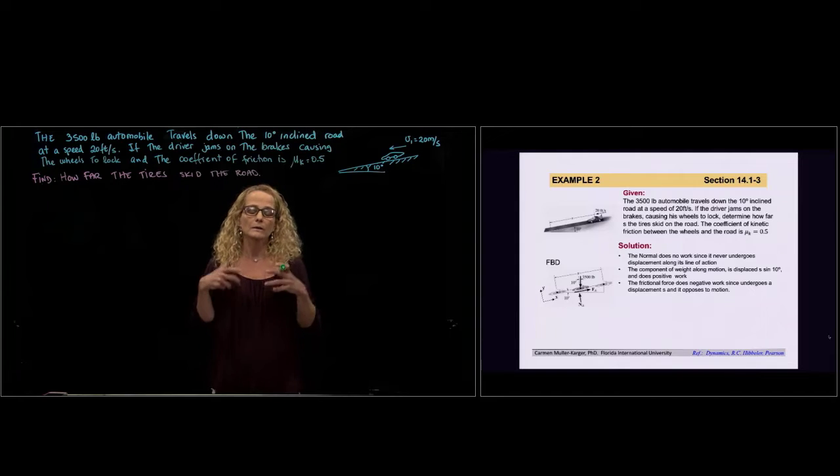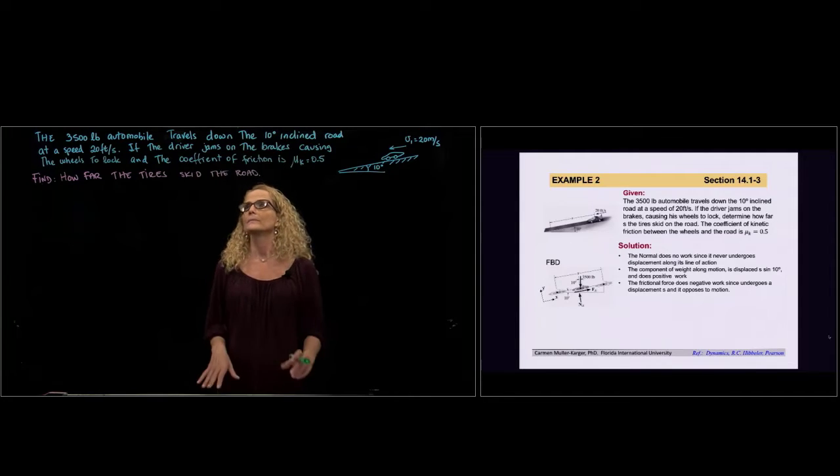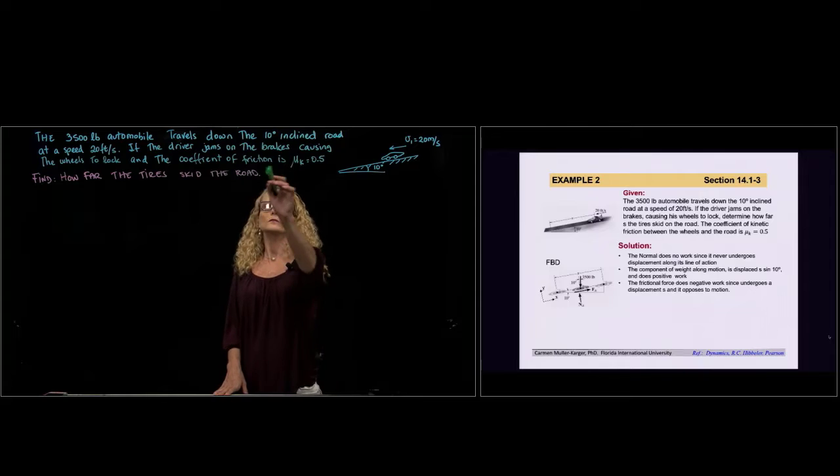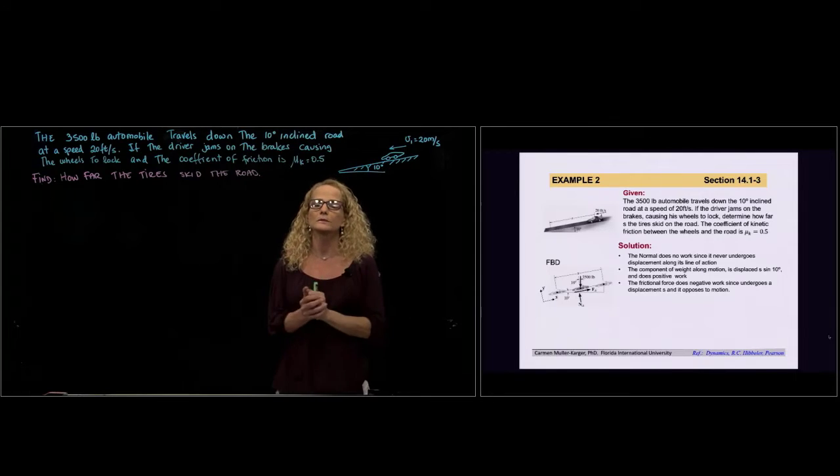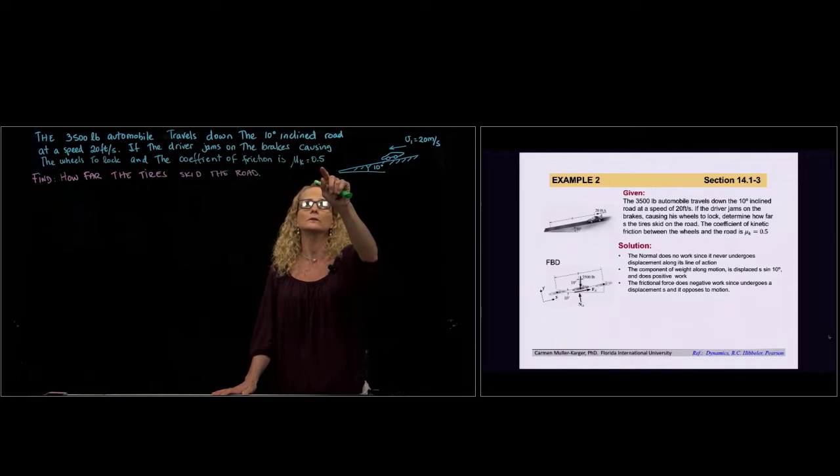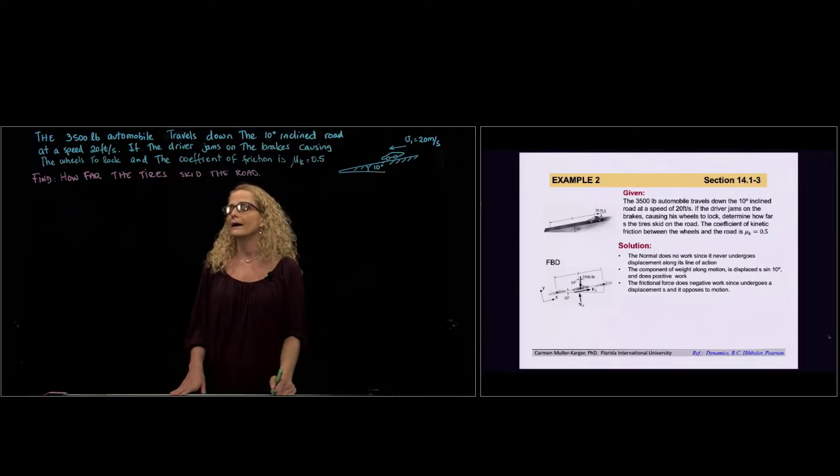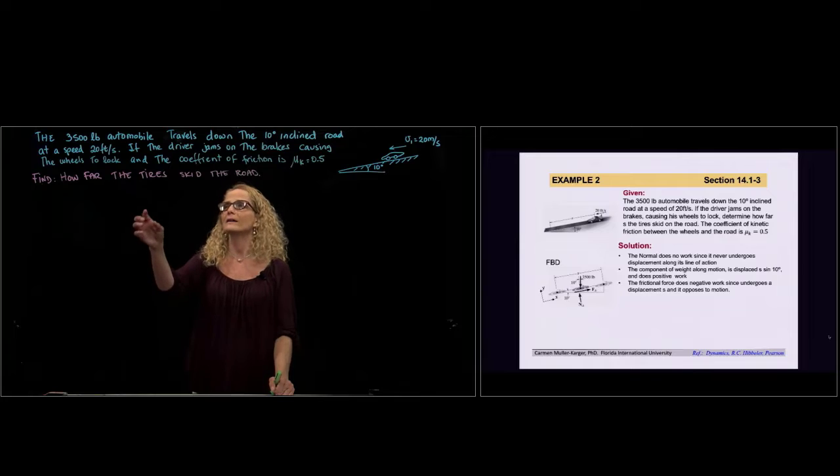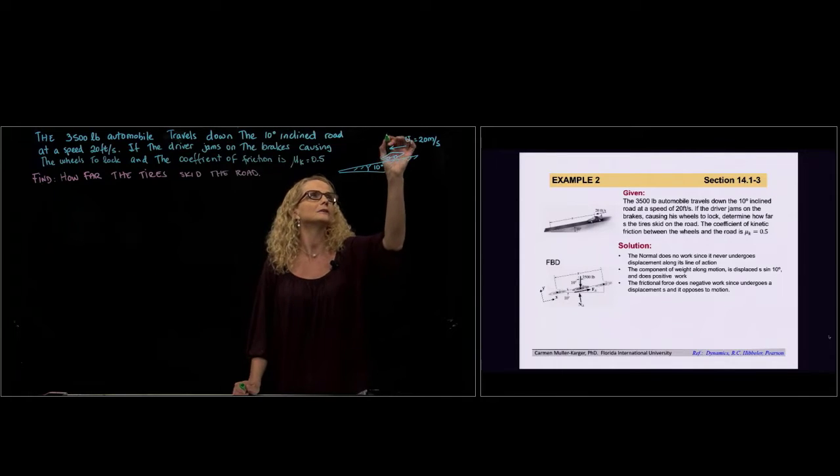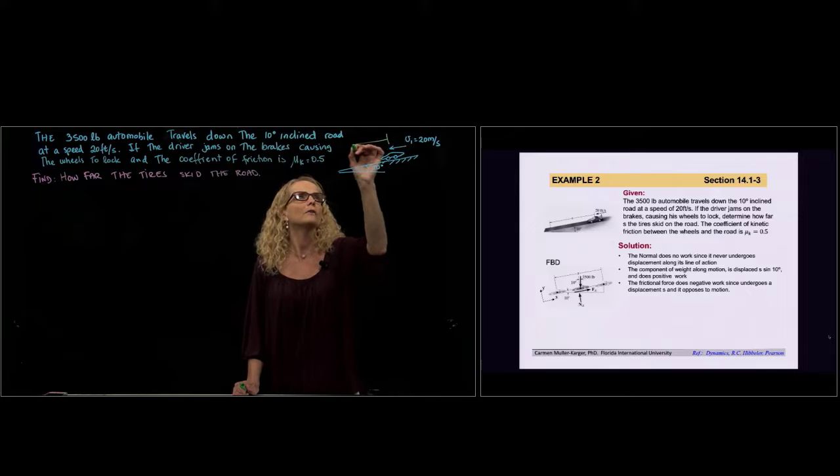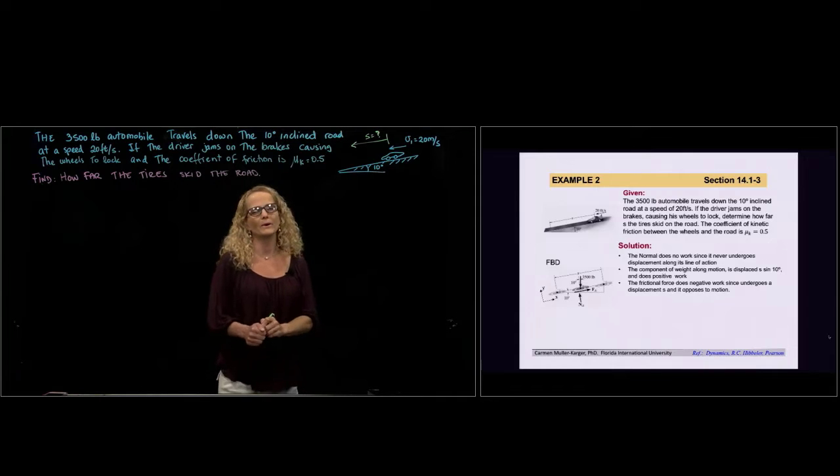When the wheels lock, the car starts to slide. The coefficient of friction between the wheels when locked and the surface is 0.5. They ask us to find how far the tires skip on the road. So if this is the initial position, how far did the car go after it brakes?